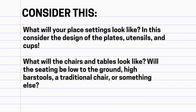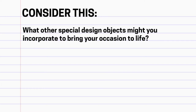Now take a moment to brainstorm your ideas. Consider this and write it down. What will your place settings look like? Consider the design of the plates, utensils, and cups. What will the chairs and tables look like? Will the seating be low to the ground, high bar stools, a traditional chair, or maybe a picnic blanket? What other special design objects might you incorporate to bring your occasion to life?